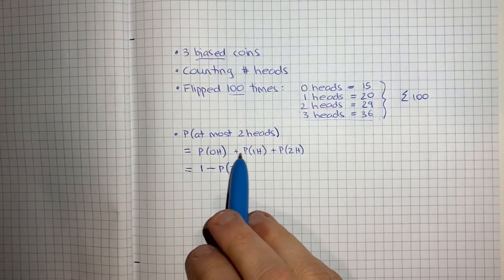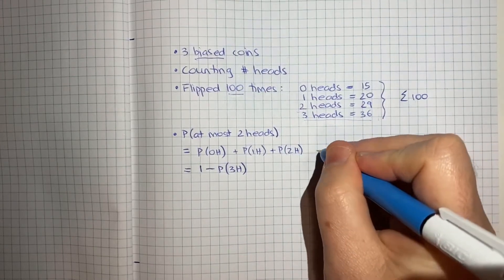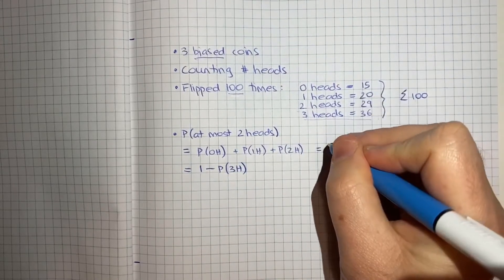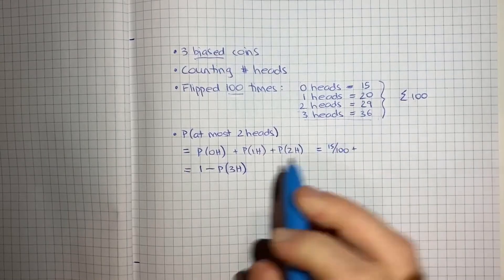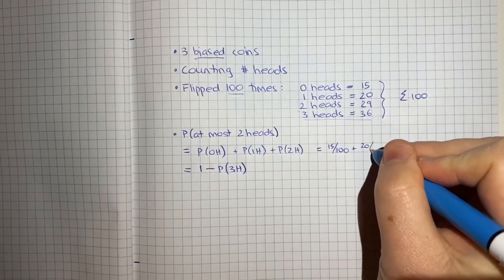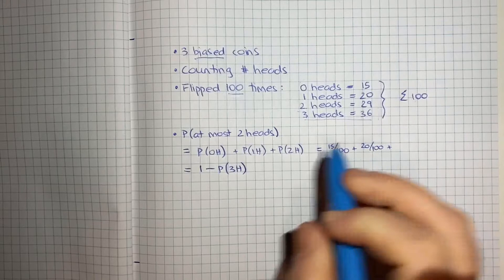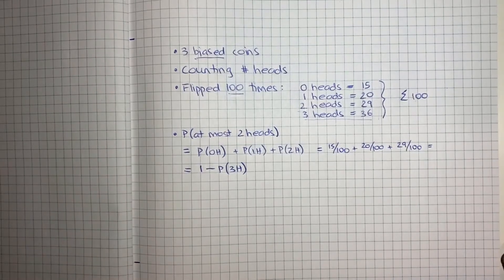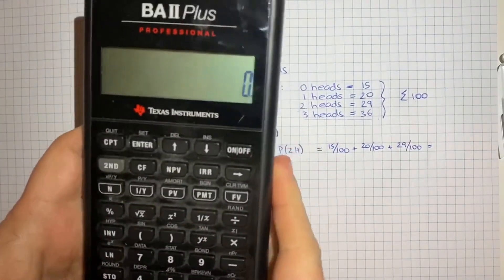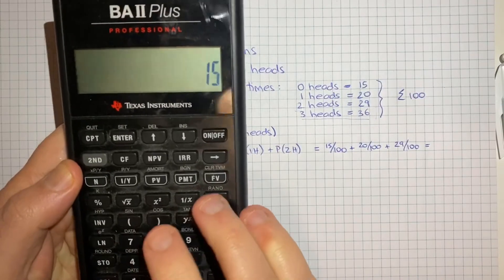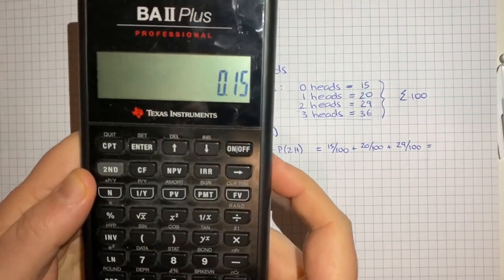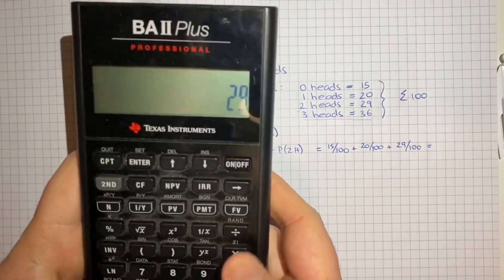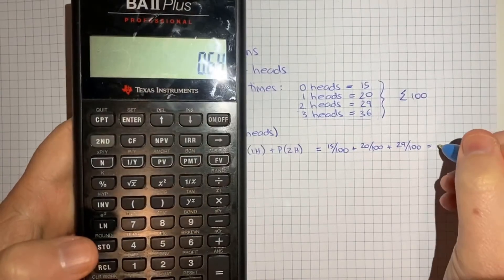So sticking with this first approach, we simply add them up. So the probability of no heads is 15 on 100 plus the probability of one head is 20 on 100 plus the probability of two heads is 29 on 100. And if I just plug all three of those into the calculator, we get 15 divided by 100 plus 20 divided by 100 plus 29 divided by 100, and that gives us 0.64.